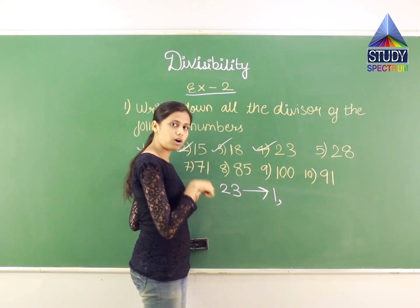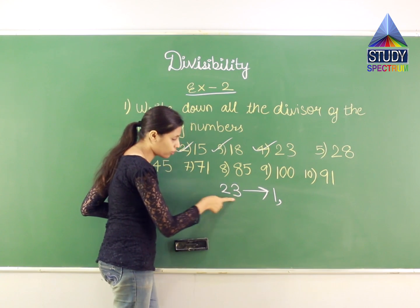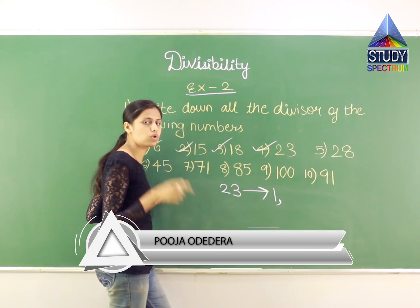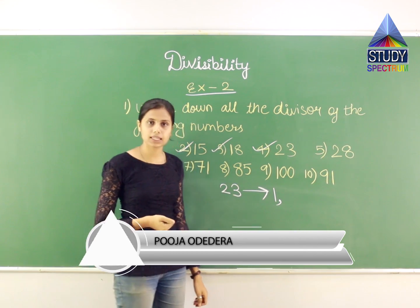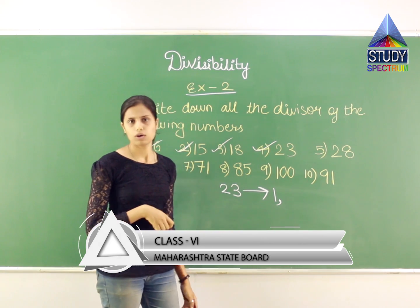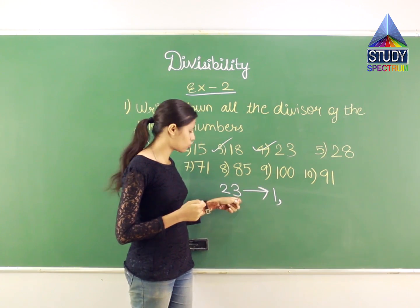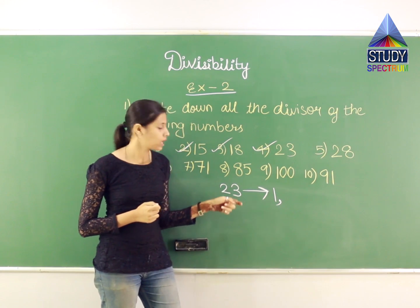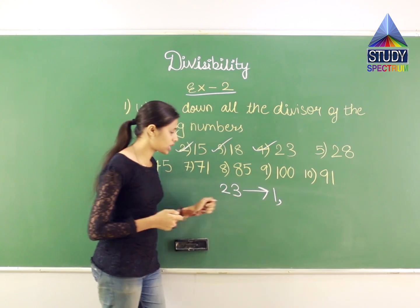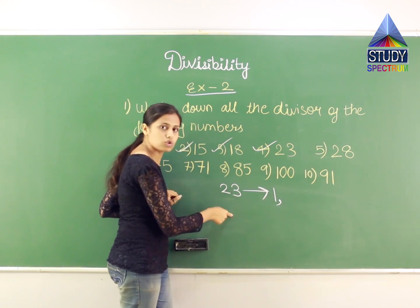We will check for 3 using the divisibility test: add the digits — 2+3=5. Is 5 divisible by 3? No. So 23 cannot be divided by 3. For 4, I need an even number at the end — not possible. For 5, I need 0 or 5 at the end, but I have 3 — not possible. For 6, I need both 2 and 3 as divisors, but I don't have either. So 23 cannot be divided by 6.